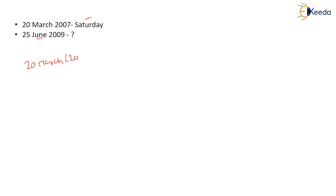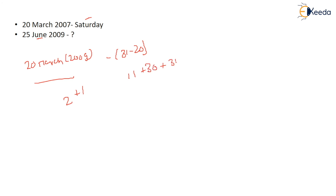Next question: 20 March 2007 is Saturday — what is 25 June 2009? Forget this date; make it 25 March 2009. Big year minus small year gives 2, and there is one leap year: 2008. After reaching 20 March 2009, days remaining in March: 31 minus 20 = 11. April has 30 days. May has 31 days. June has 25 days.